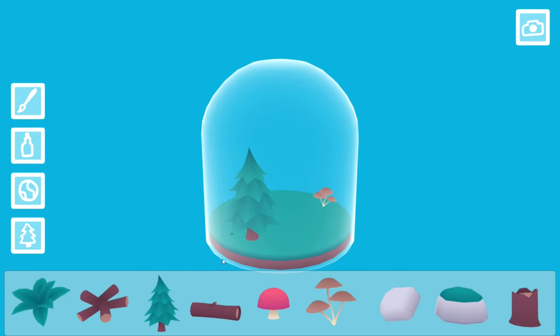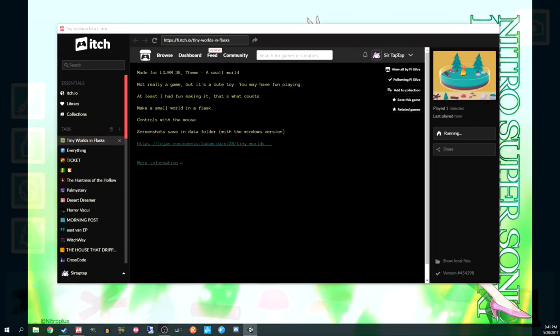I think this is probably the... this one and the petri dish are the most sensible ones. Yeah, that's tiny world or let me see the exact name. I'll mess it up. Tiny worlds and flasks.